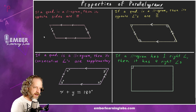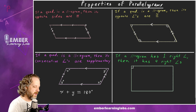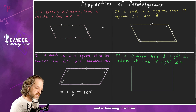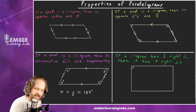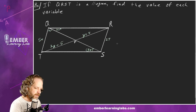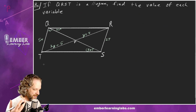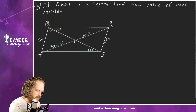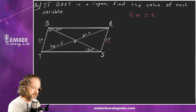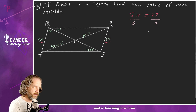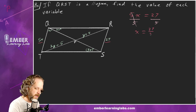We use the theorem that opposite sides of a parallelogram are congruent. So for x, we set up: 5x = 27. Dividing both sides by 5, x = 27/5. You have to be able to match the variable to the right theorem — that's the key thinking skill here.